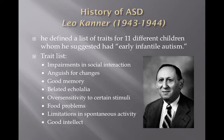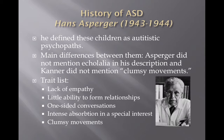Kanner identified a list of traits for 11 different children and suggested that these children had early infantile autism. His trait list includes things we commonly recognize in children with autism, such as impairments in social interaction, limitations in spontaneous activity, and anguish for changes — but also some more positive traits such as good memory and good intellect. Hans Asperger also came up with a list of traits for these children but identified them as autistic psychopaths. The main difference was that Asperger did not mention echolalia, while Kanner did not mention clumsy movements. Their trait lists are otherwise very similar, mostly having to do with social interaction and communication — for example, one-sided conversations and little ability to form relationships.